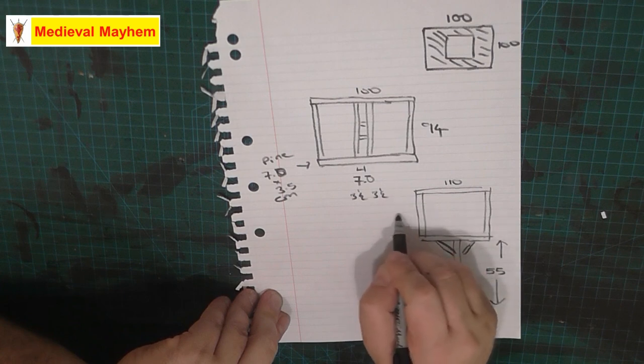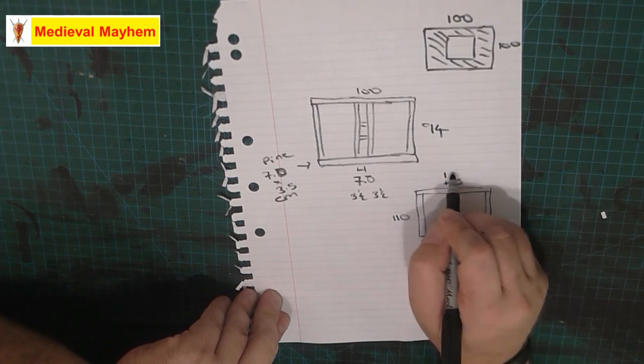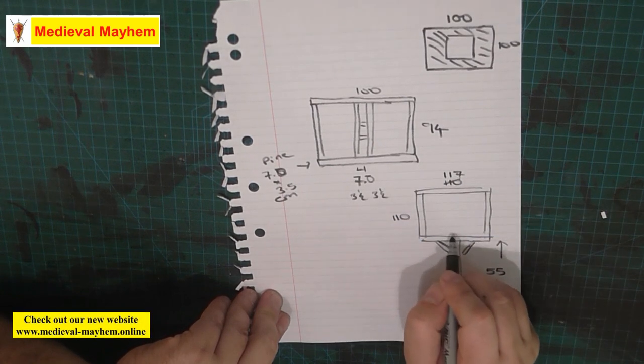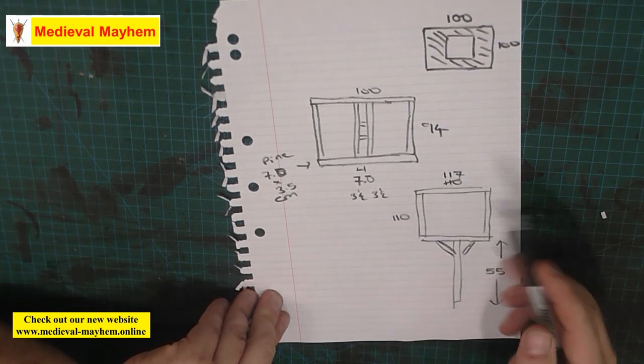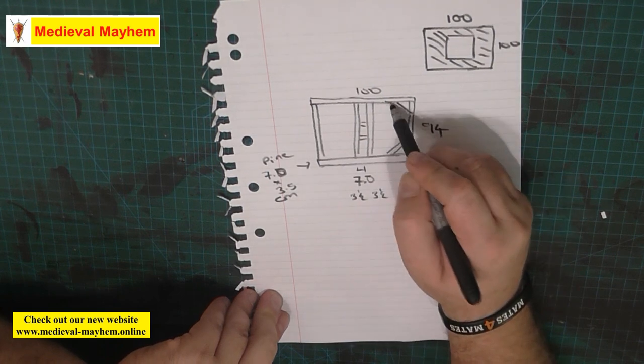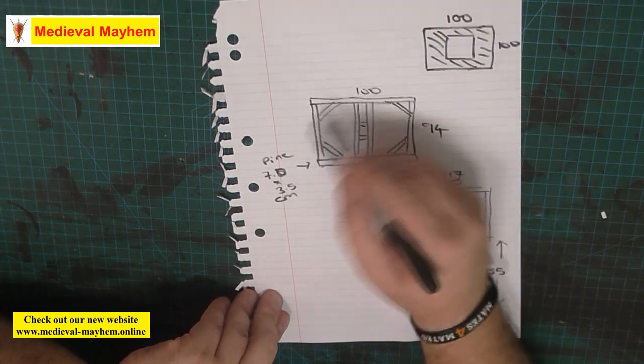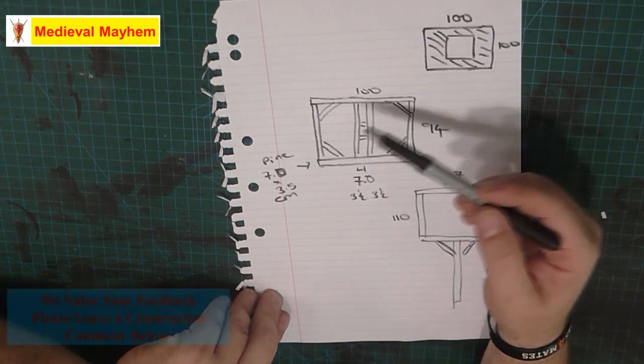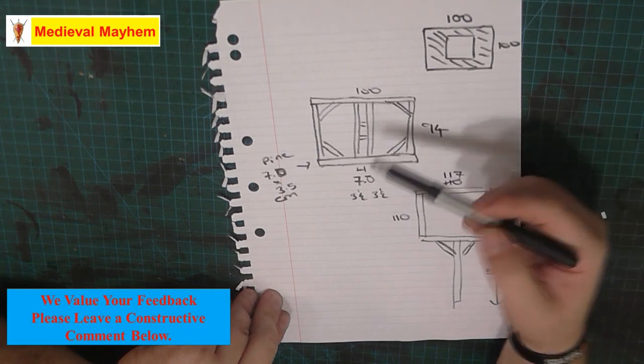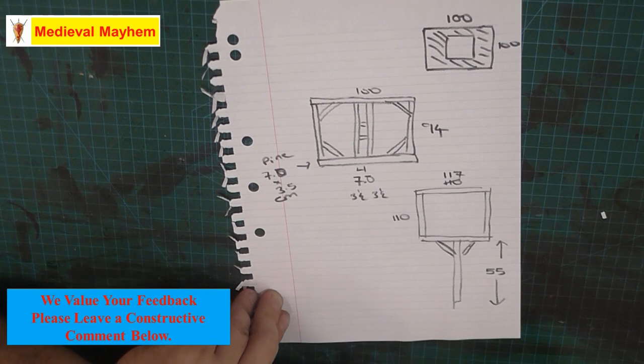This will be approximately 110. This will therefore be, if that's 110, that'll be 117. Now let me see. Now this isn't structural per se, but what it is, it's simply designed to have some weight in it so that if the target gets caught by some wind, this isn't going to fall over. And there we go.